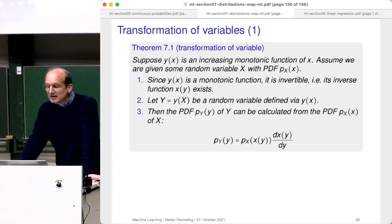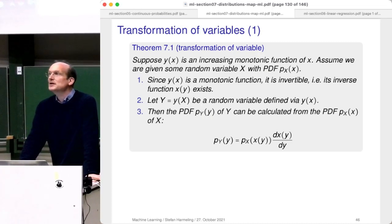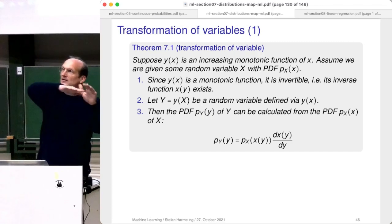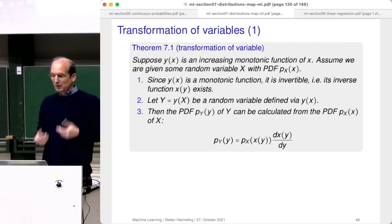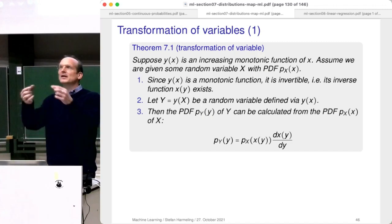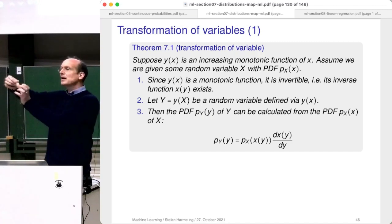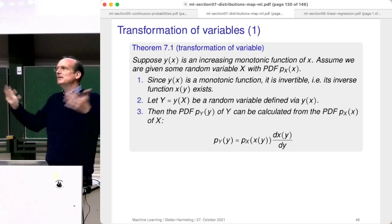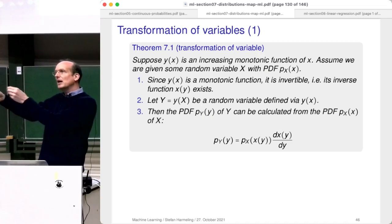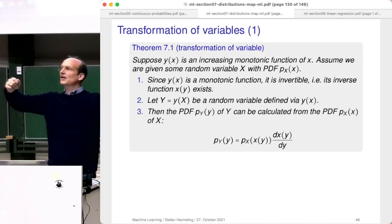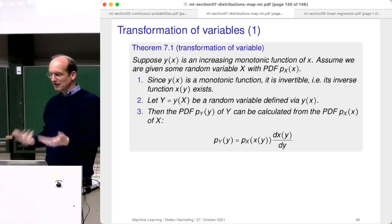Plugging a random variable into my function little y defines a new random variable, and now I can ask: what is the PDF? The distribution of x is some function. This monotonic function y of x is taking the x-axis and transforming it — think of it like a rubber band you can stretch. If you squash stuff together, the density gets larger; if you spread it wider, the density should go down. So it makes sense that this should be defined.